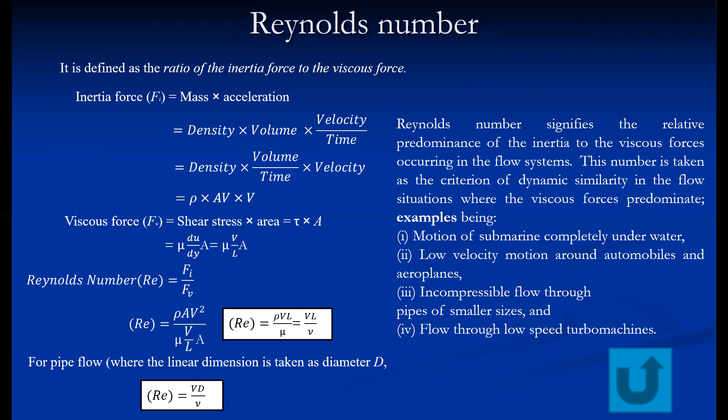In laminar flow, viscous forces are dominant over inertia forces, which is why the Reynolds number is low. In turbulent flow, inertia force is dominant over viscous force, so the Reynolds number is very high. Generally, this number is used to recognize the type of flow as well.